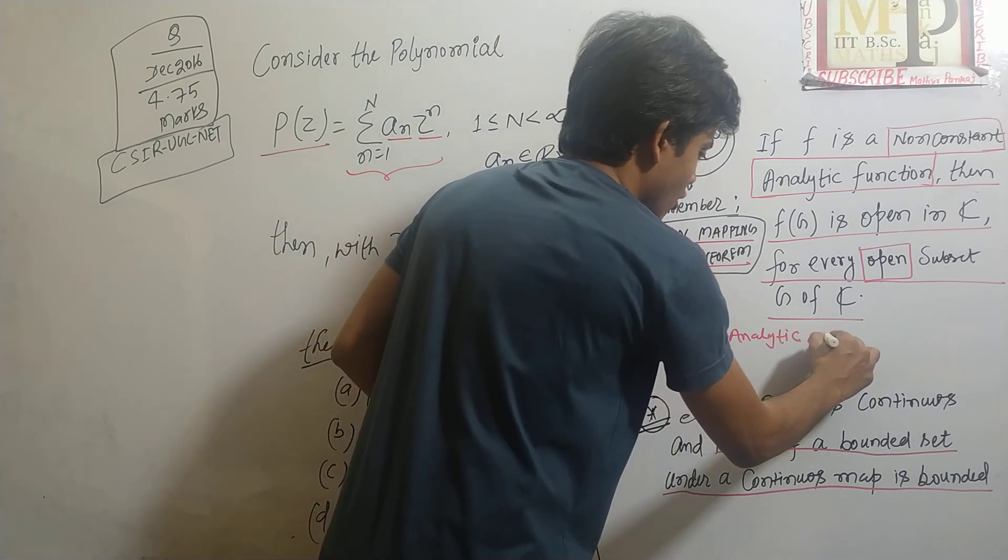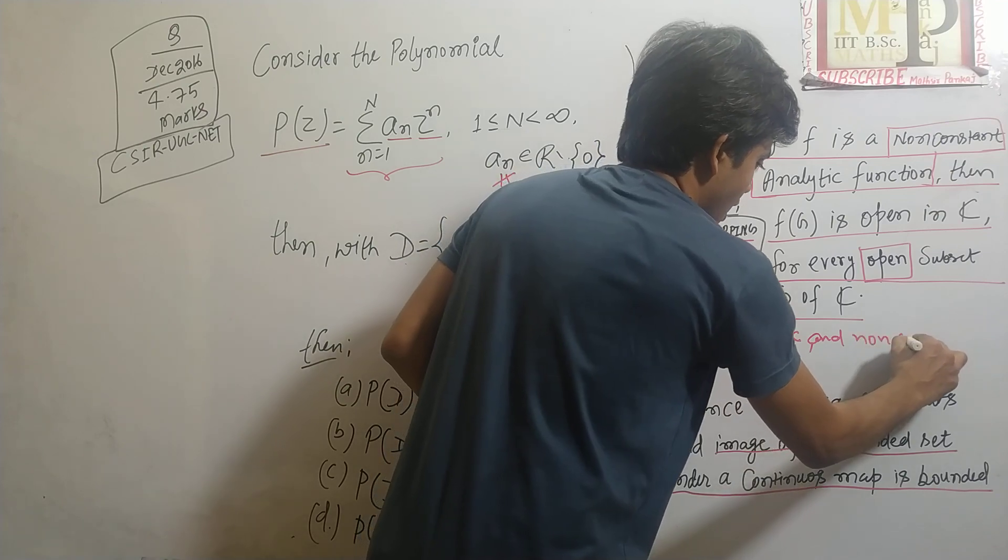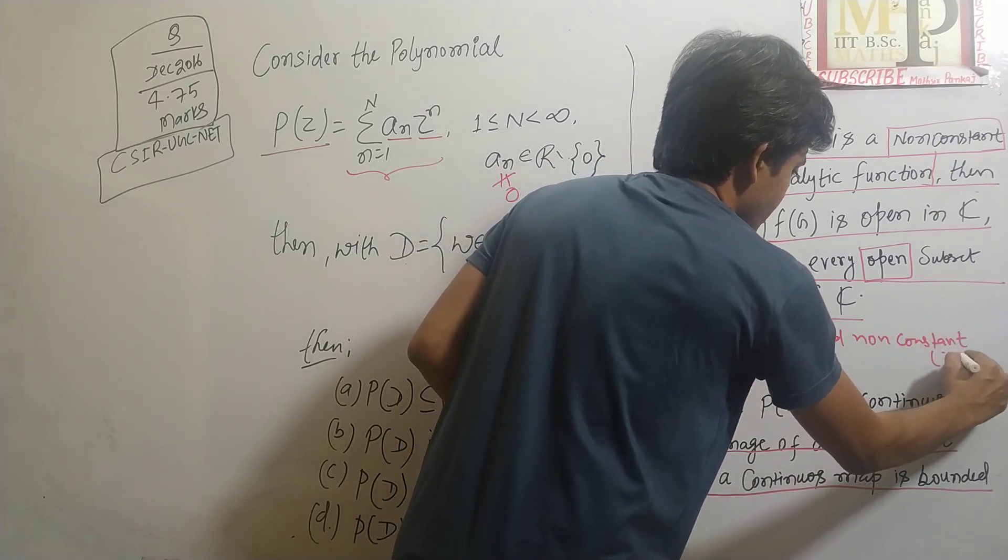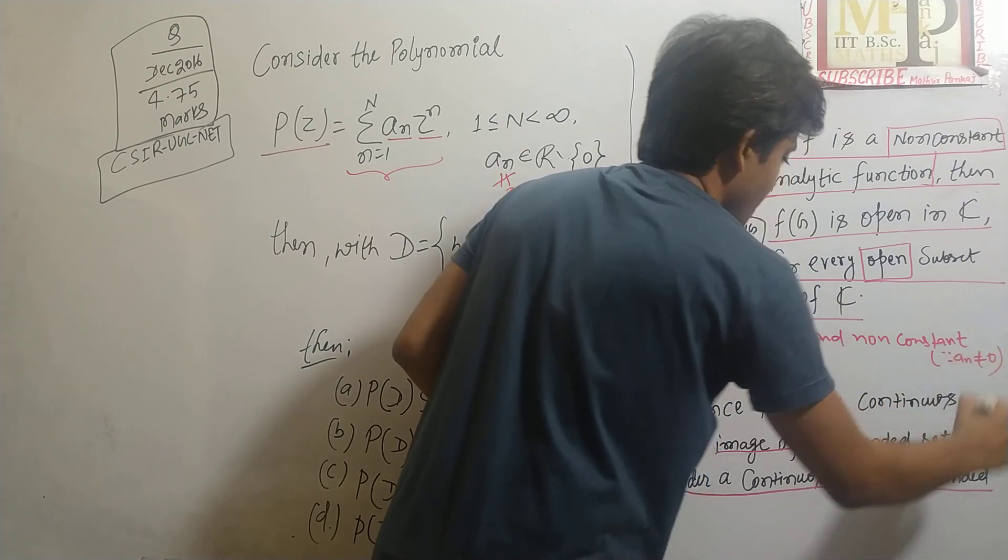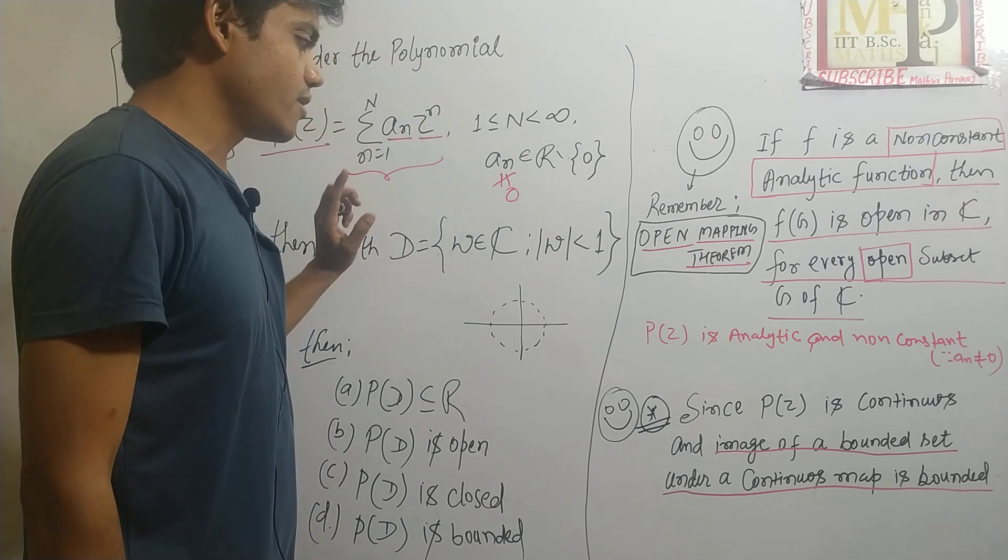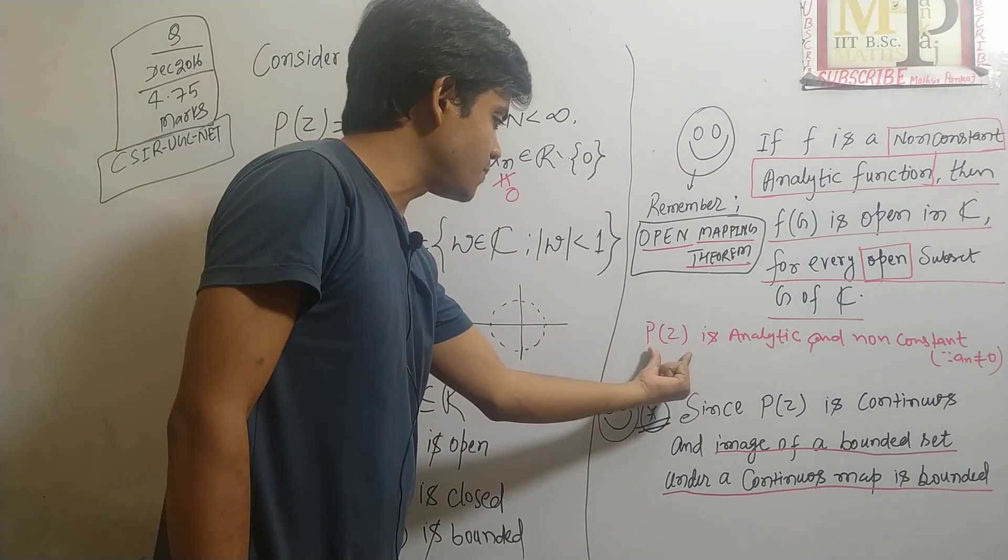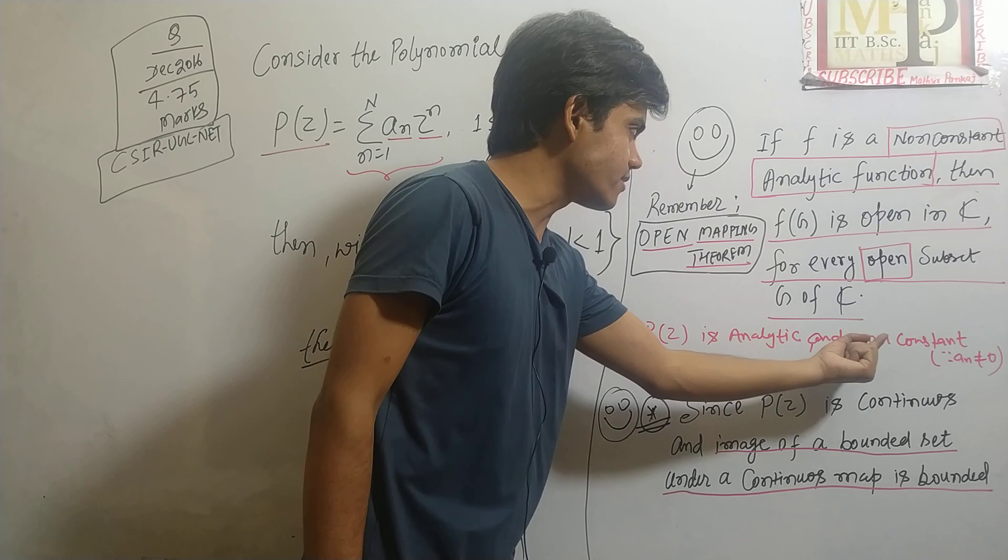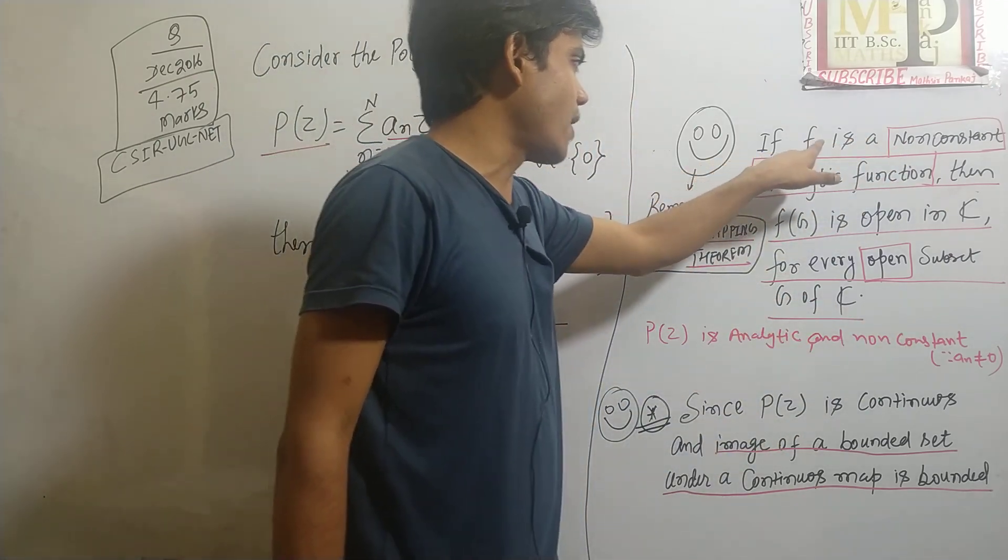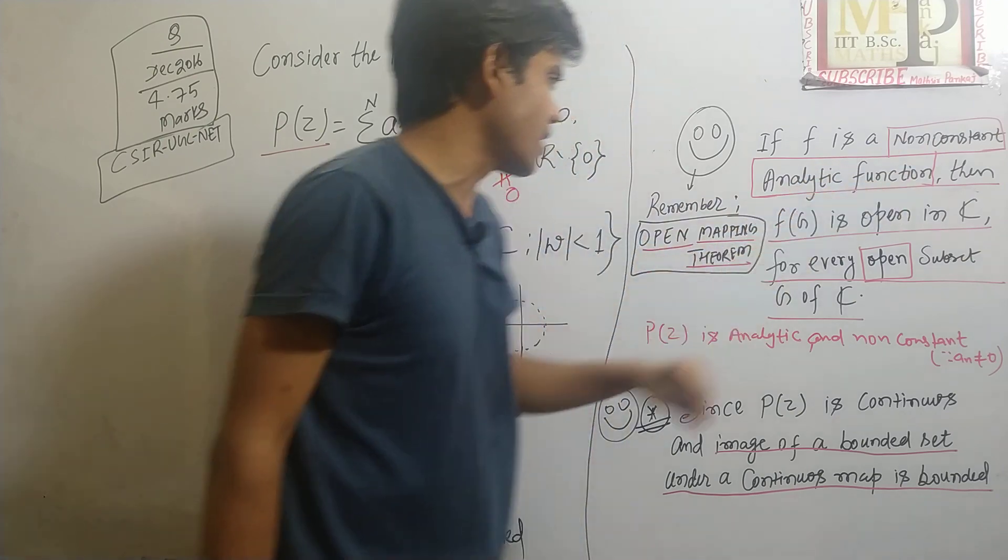Is analytic and non-constant. How can you justify that it is non-constant? Since a_n is not equal to 0 and z to the power n is here, therefore we can say that P(z) is analytic and non-constant.